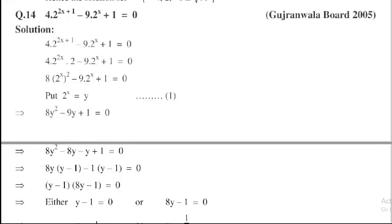8 times 1 equals 8, and 8 plus 1 equals 9. Minus 8y and minus y are the factors of minus 9y. Take 8y common from first two terms: 8y(y - 1) - 1(y - 1).